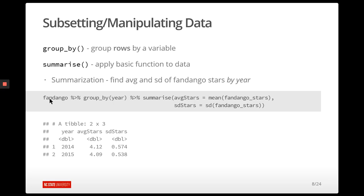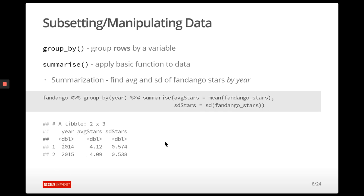So we do Fandango, add the grouping attribute, and then run summarize. The summarize function knows that for every group it should find the average stars and the standard deviation stars via these functions. And for each one of our group values, we end up getting the average and standard deviation of the stars.